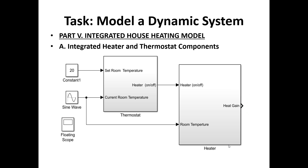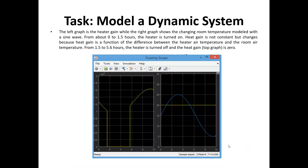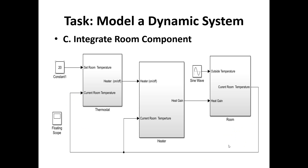Here's the integrated house heating model, integrating the heater and thermostat components. We connect the two subsystems — the thermostat and the heater — and simulate the integrated heater and thermostat component. The left graph shows the heater gain while the right graph shows the changing room temperature modeled with a sine wave. From about 0 to 1.5 hours the heater is on and heat gain changes because it is a function of the difference between heater air temperature and room air temperature. From 1.5 to 5.6 hours the heater is off and heat gain is zero.